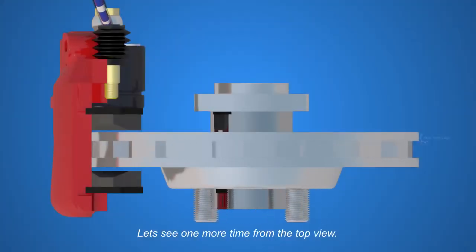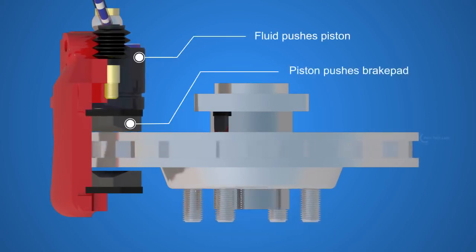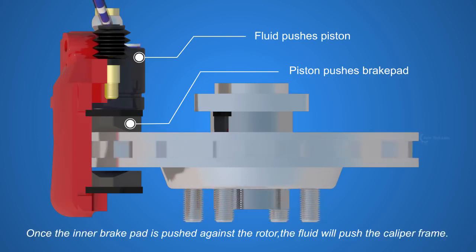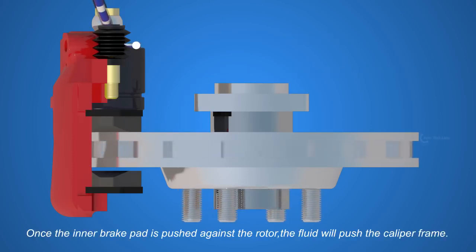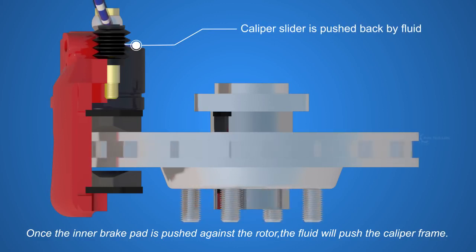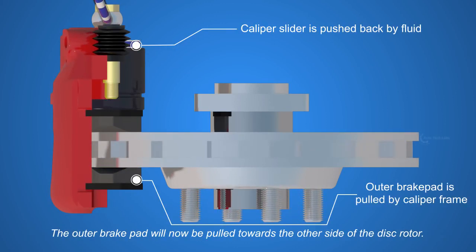Let's see one more time from the top view. The fluid pushes the piston, and the piston pushes the inner brake pad. Once the inner brake pad is pushed against the rotor, the fluid will push the caliper frame. The outer brake pad will now be pulled towards the other side of the disc rotor.